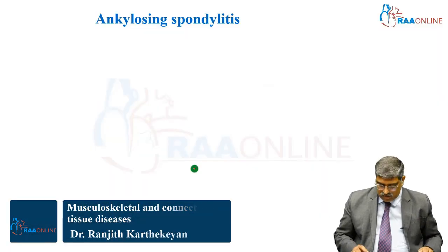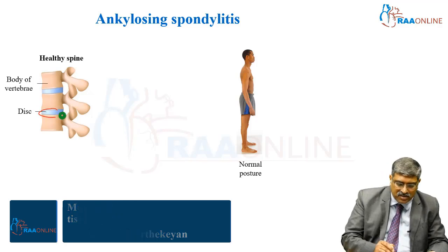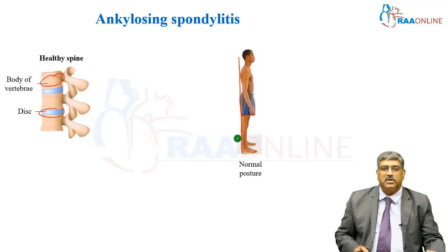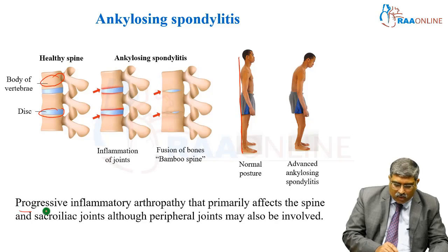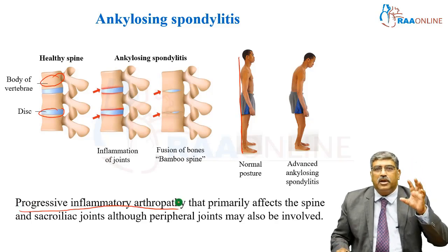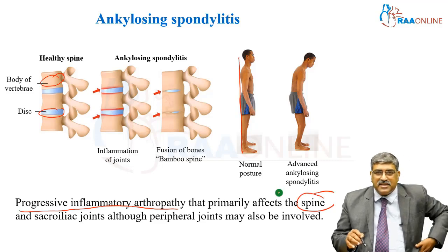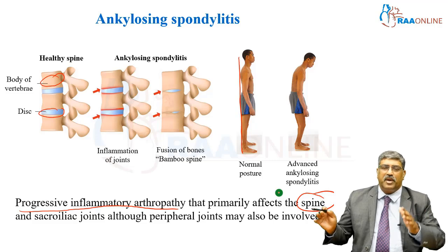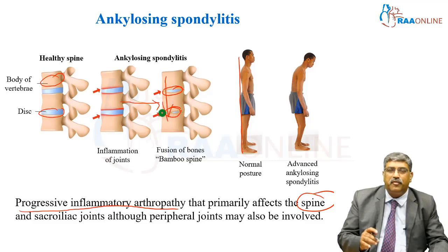Coming to ankylosing spondylitis, here you can see the disc space and the body of vertebra — this is the normal position. In ankylosing spondylitis, there is a progressive inflammatory arthropathy which affects the spine and sacroiliac joint, although peripheral joints may be involved. As the disease progresses, you can see the disc space being narrowed and there is fusion.